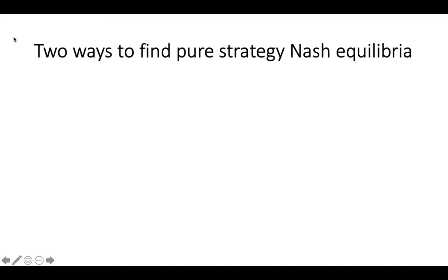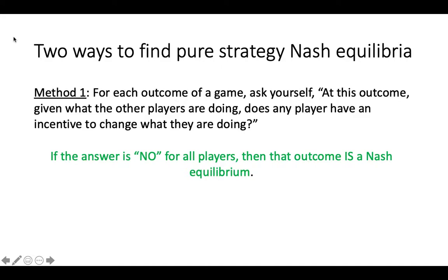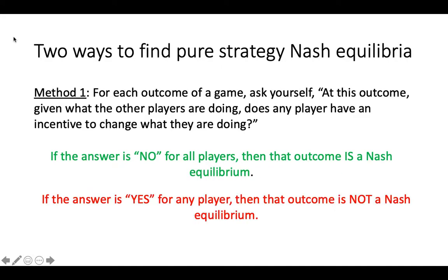These two interpretations point to two methods to solve for pure strategy Nash Equilibria. The first method, based on the idea that no player has an incentive to change their strategy, is to go through each possible outcome of a game and ask yourself: at this outcome, given what the other players are doing, does any player have an incentive to change what they are doing? If the answer is no for all players, then that outcome is a Nash Equilibrium. If the answer is yes for any player, move on, because that outcome is not a Nash Equilibrium.